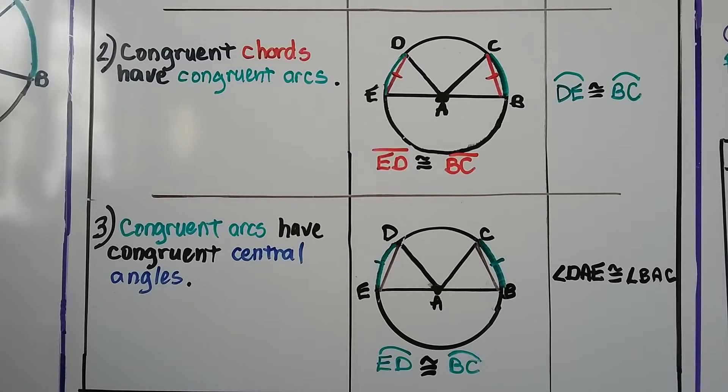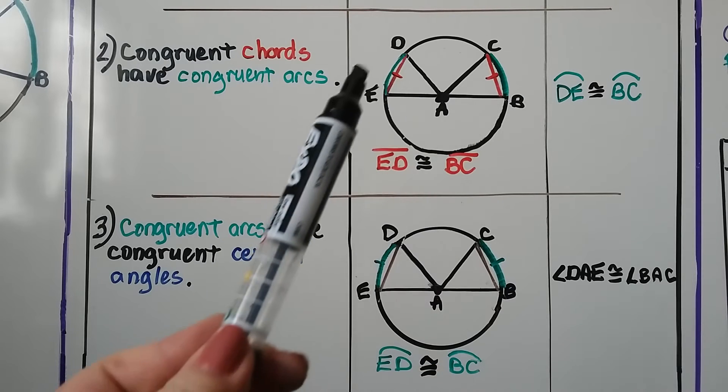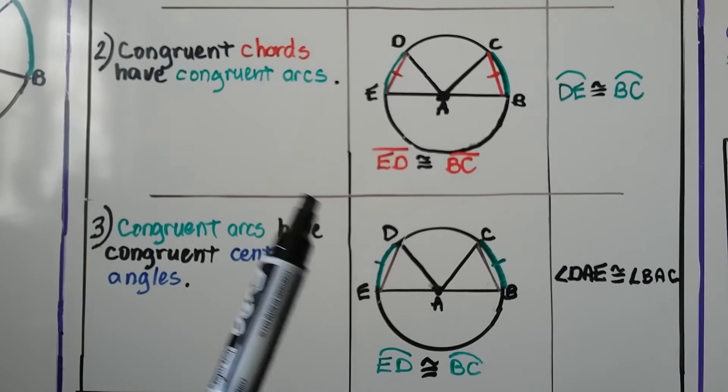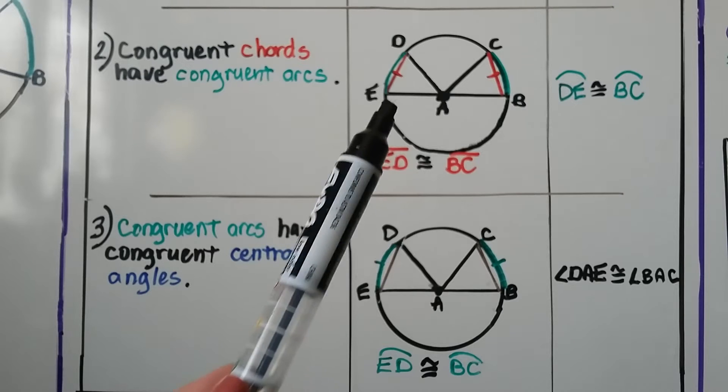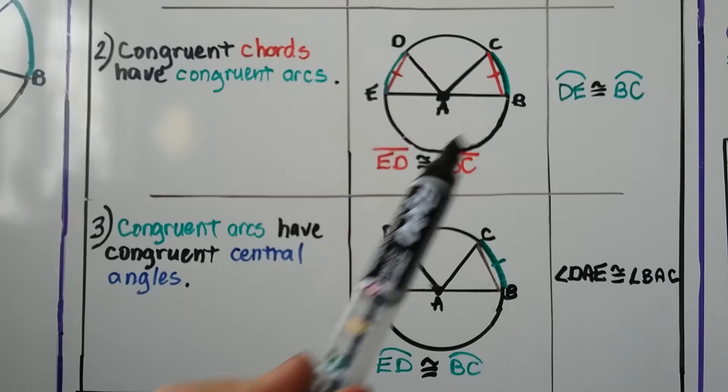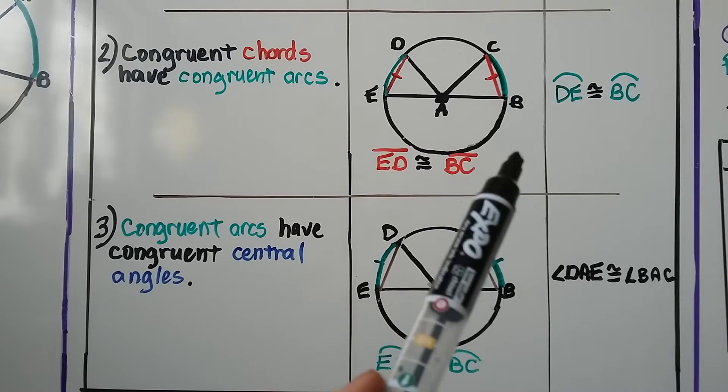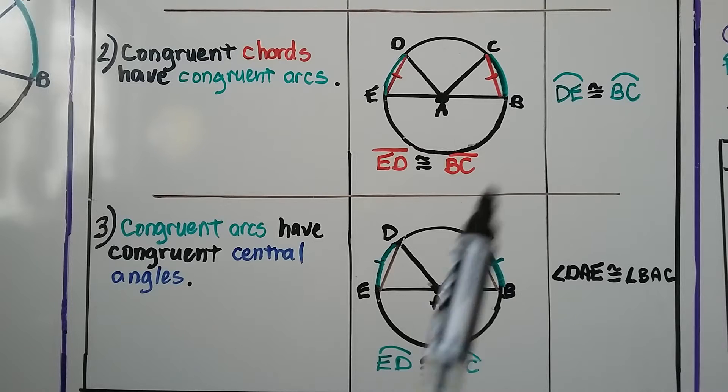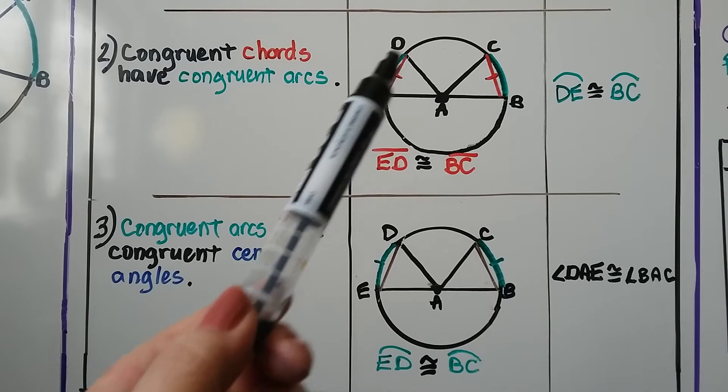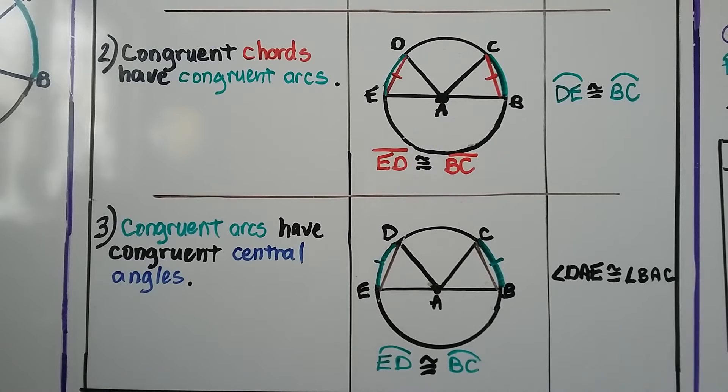For the second part of the theorem, we have congruent chords have congruent arcs. So we know these two chords are congruent, well, then the arcs are congruent. Segment ED, right here, we can even see a little congruent mark on it, and over here, it's congruent to segment BC. So our conclusion is that arc DE, this green arc here, is congruent to arc BC.